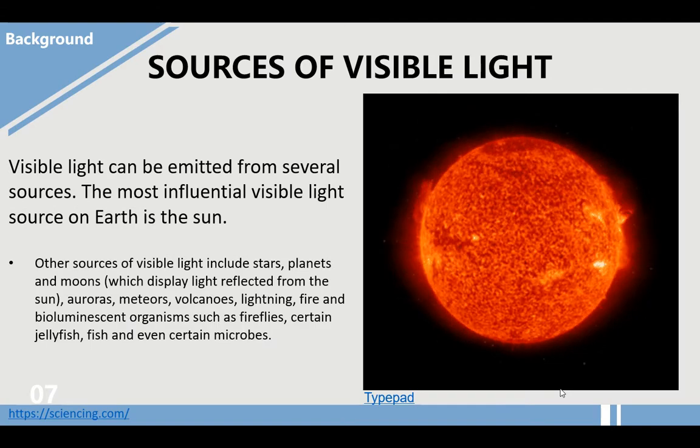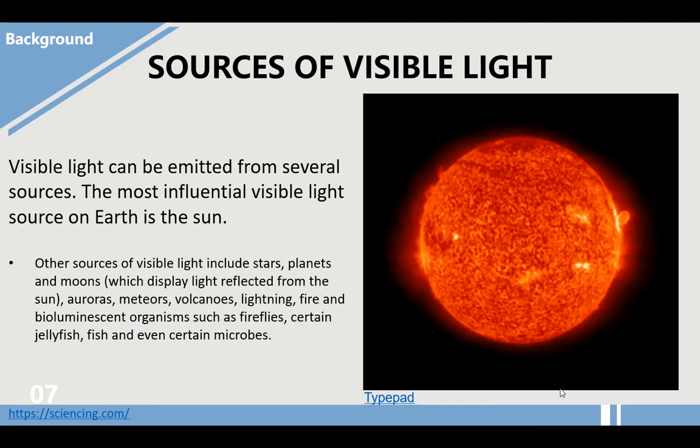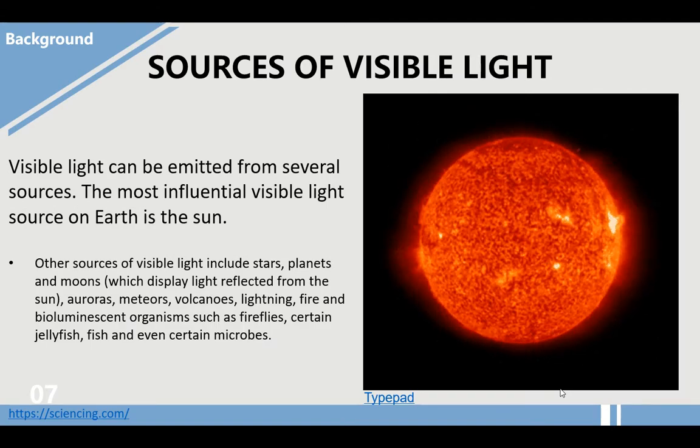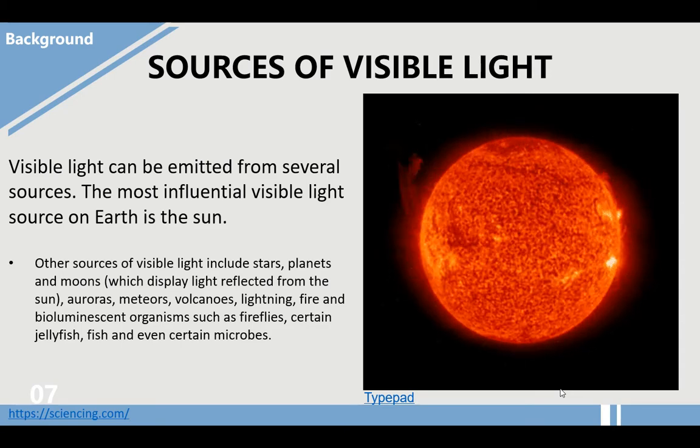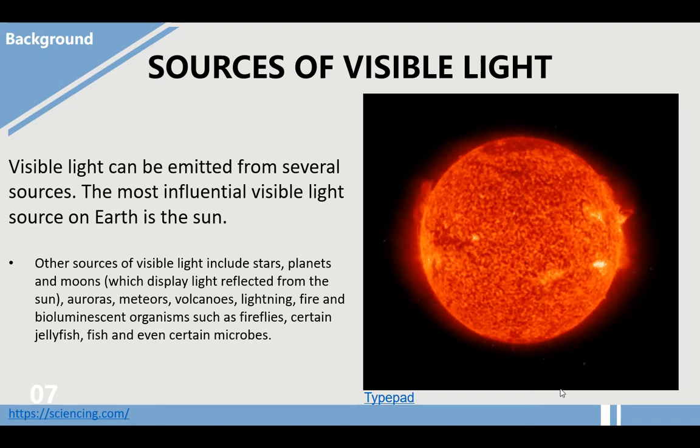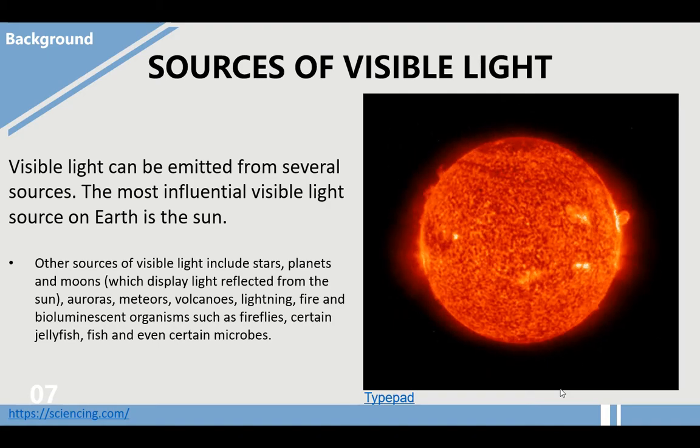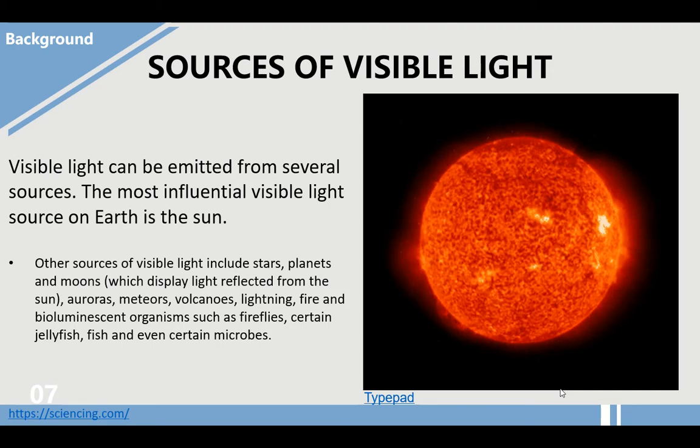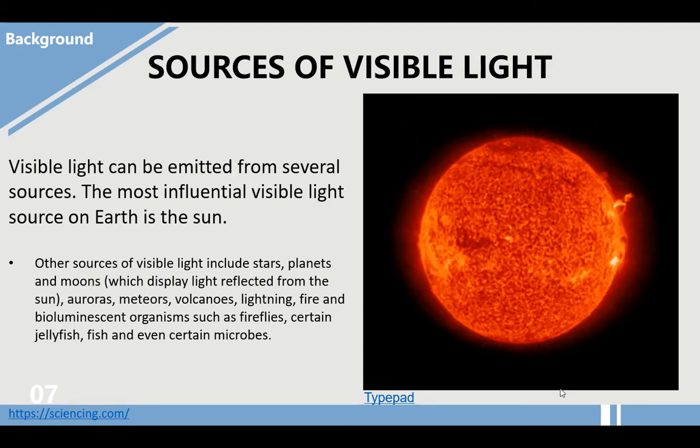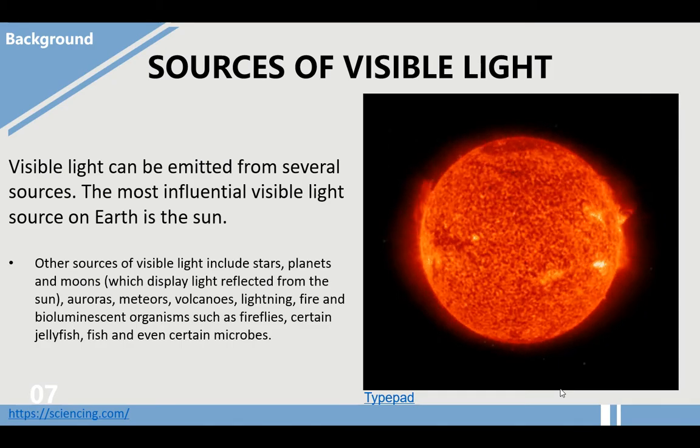One of the main sources of visible light is the sun. Other sources of visible light include stars, planets, and moons. It can be auroras, meteors, volcanoes, lightning, fire, and bioluminescent organisms such as fireflies, certain jellyfish, fish, and even certain microbes.